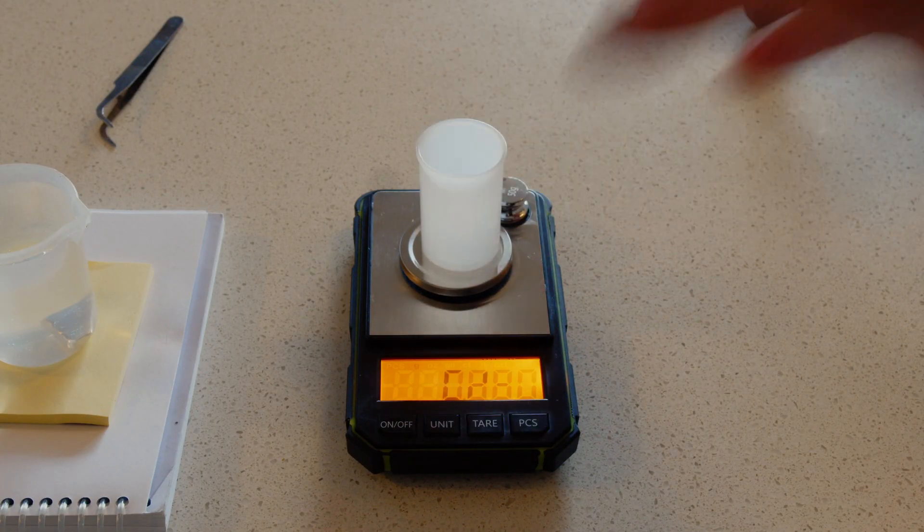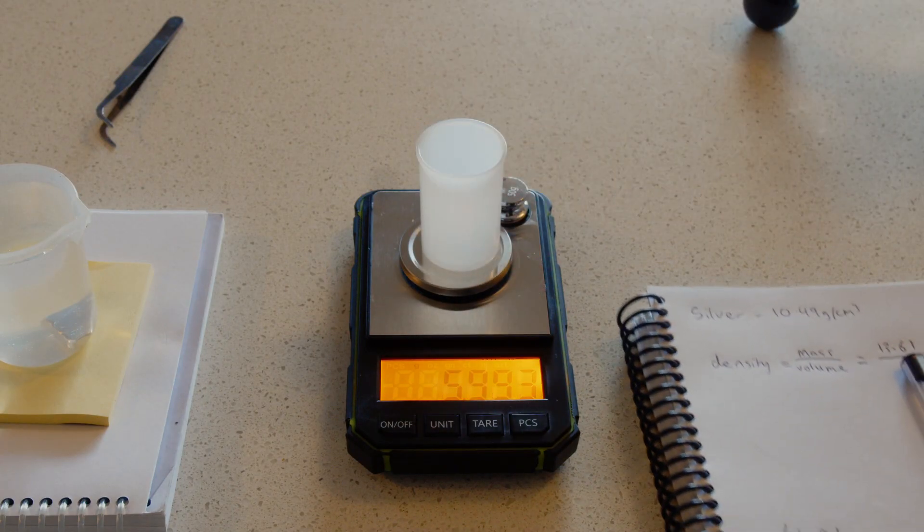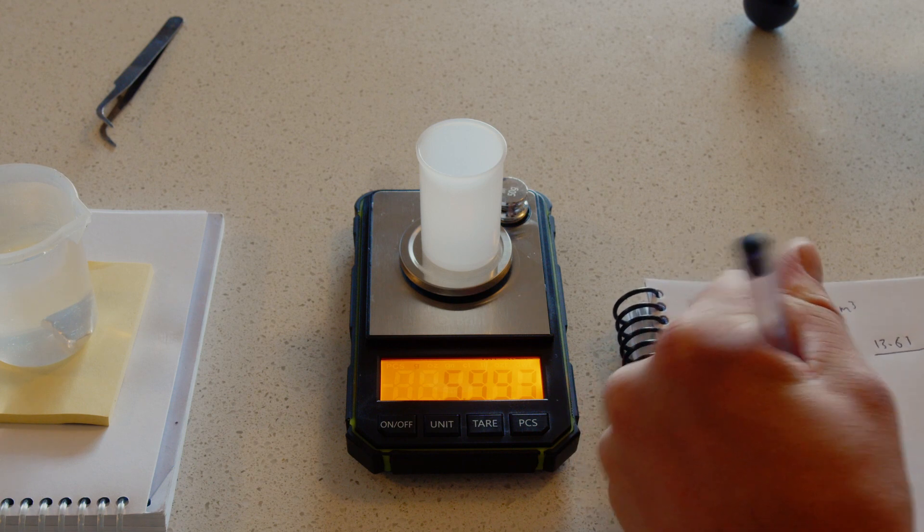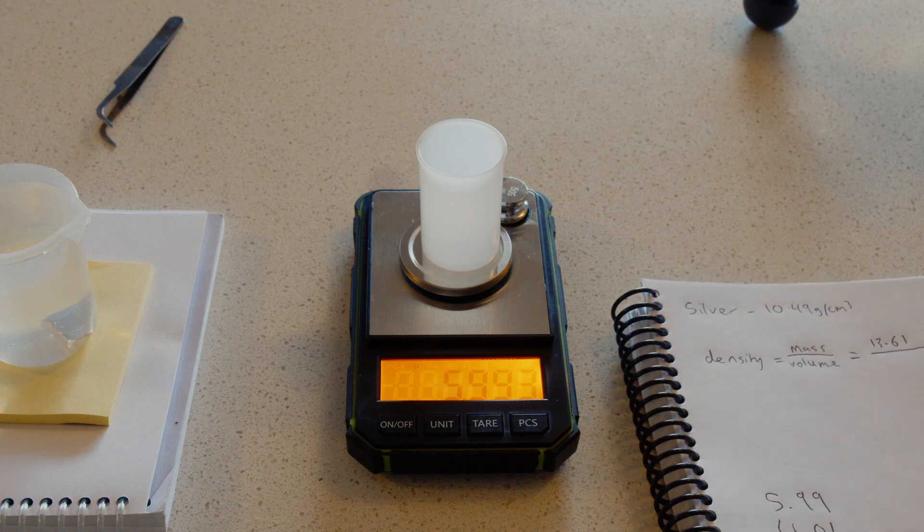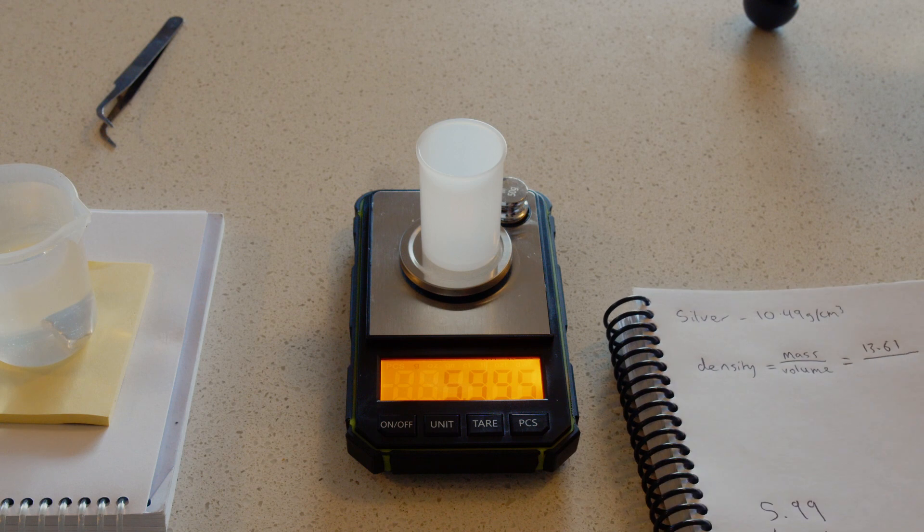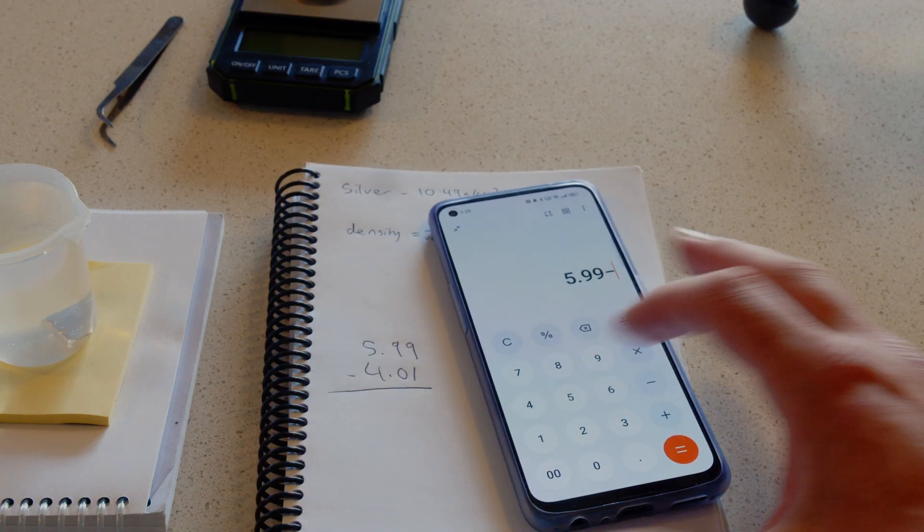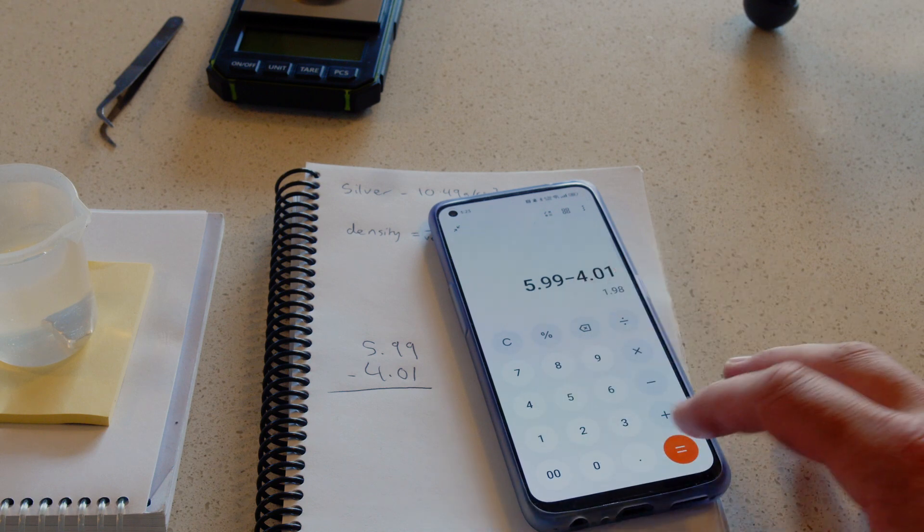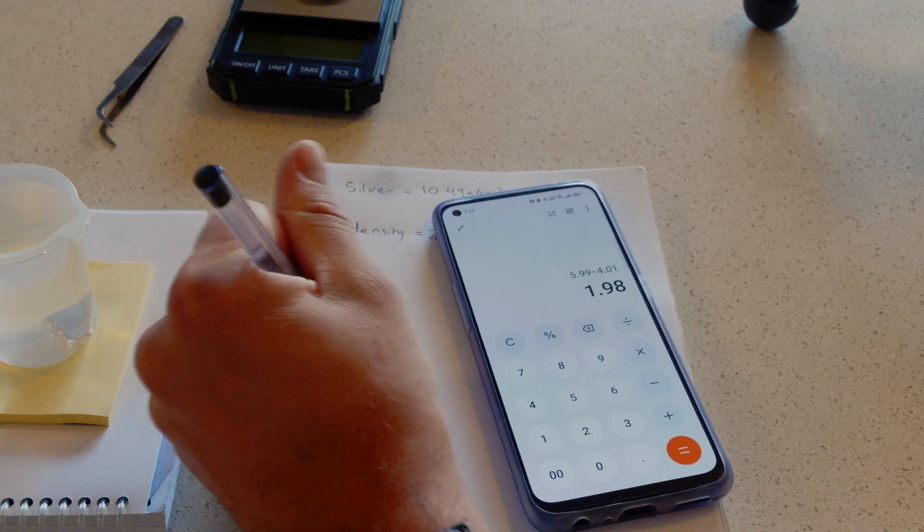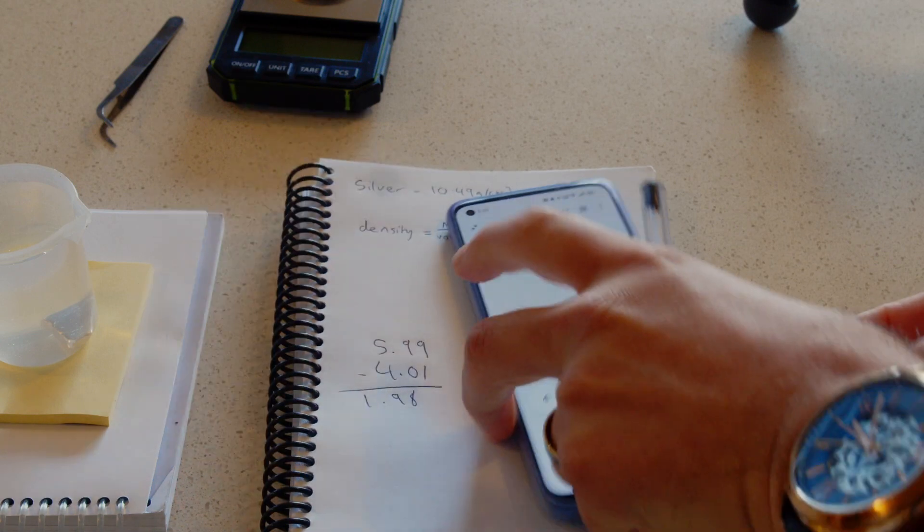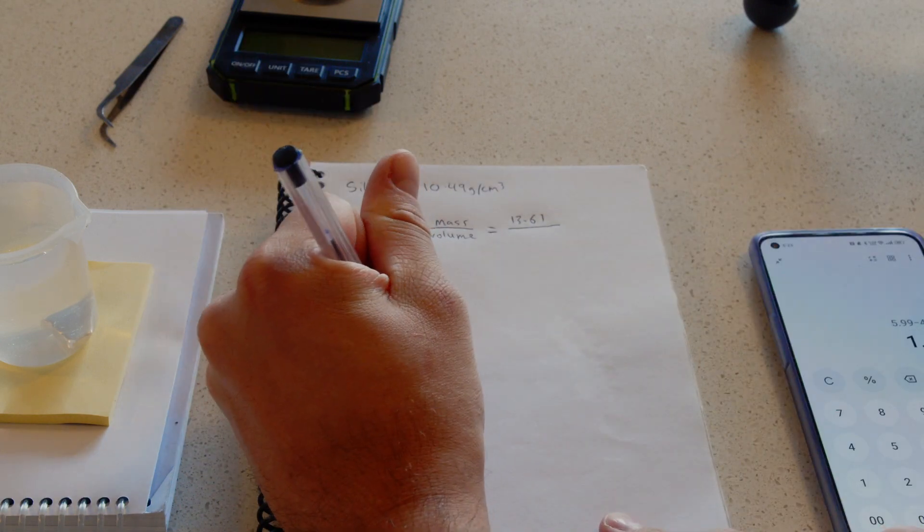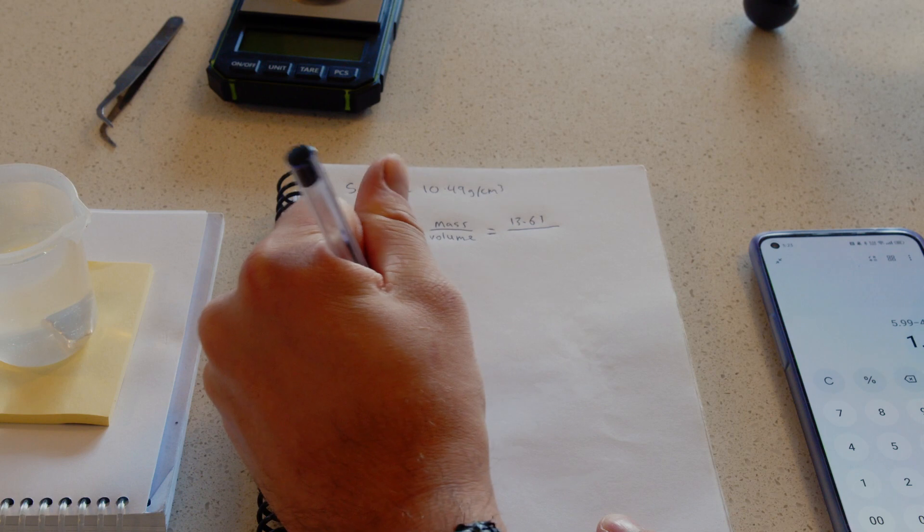Let's measure this then. I get 5.99 to two decimal places. Great. So I need to subtract these. 5.99 minus 4.01 equals 1.98. So I've got 1.98 grams of water.